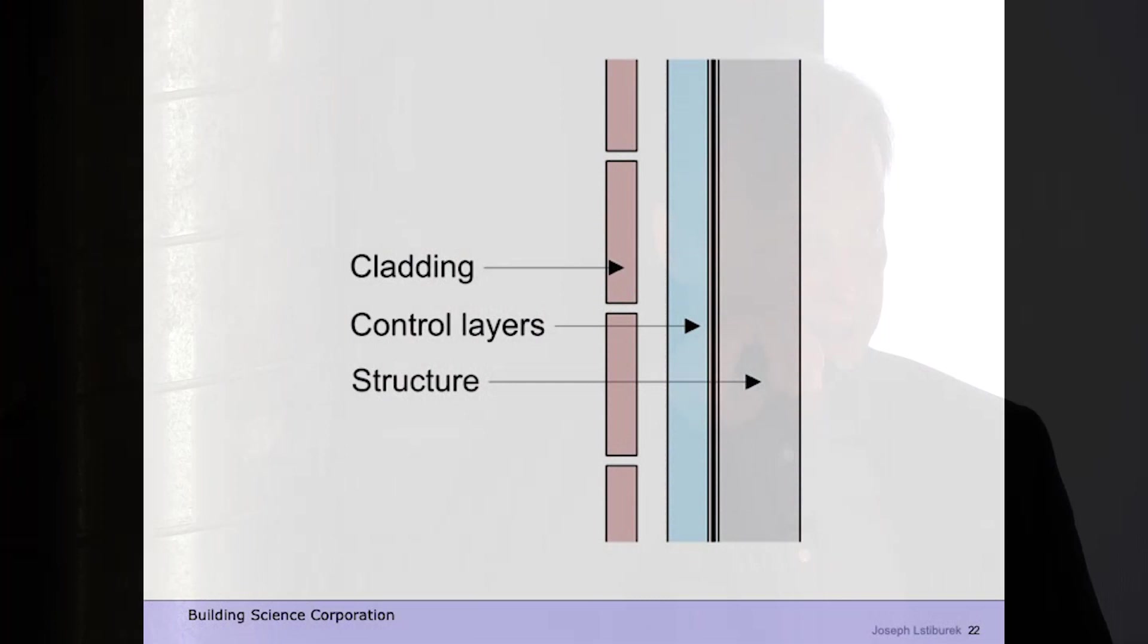Okay, so if we had a clean sheet of paper, this is what the perfect wall would look like. The black line is the water, air, and vapor control layer and it's on the outside of the structure. The blue layer is the thermal control layer, and the reason it's blue is Dow paid me to make it blue. And then the cladding should be back ventilated and drained.